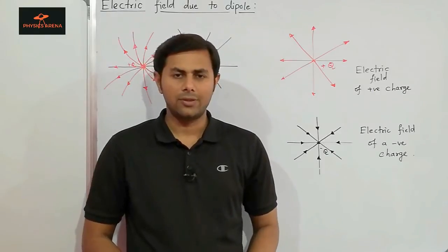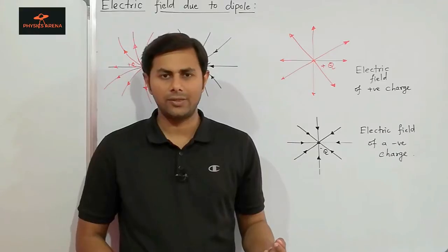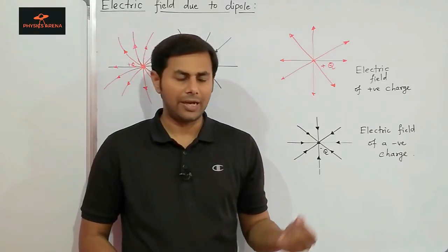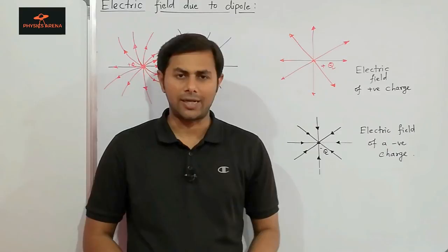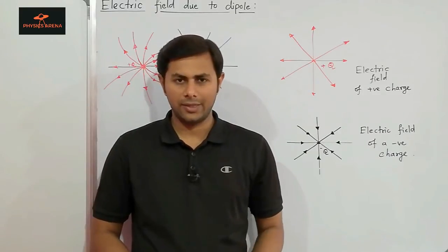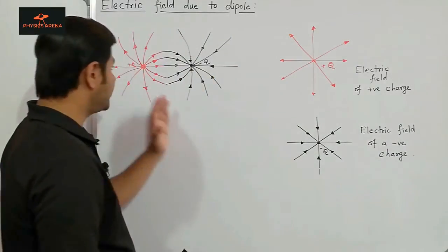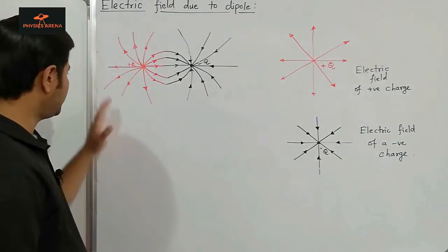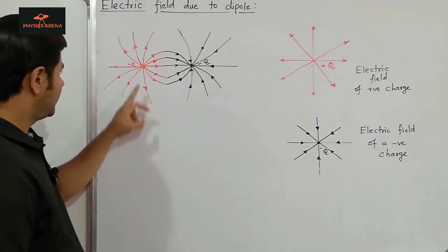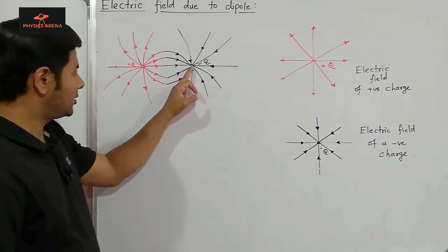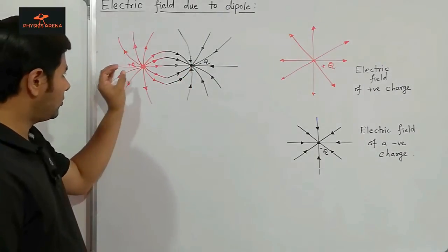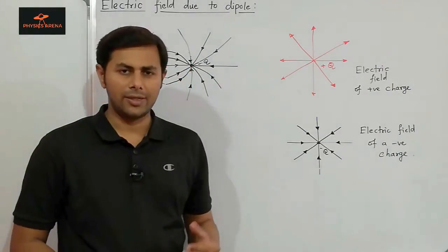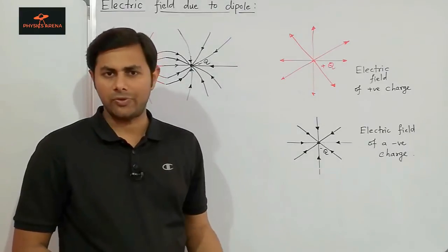The electric dipole is a positive charge kept at some distance away from the same amount of negative charge, and its electric field looks like this. As you can see, this is the positive charge and this one is the negative charge. Close to the positive charge, the electric field due to the positive charge will dominate.